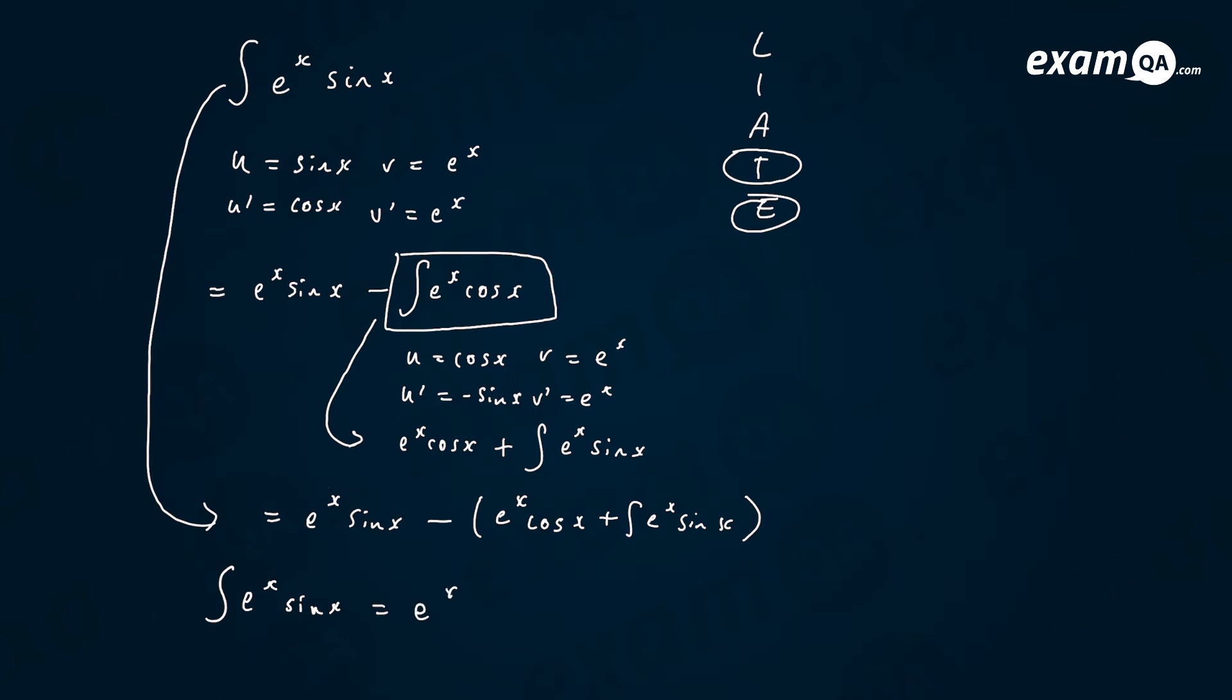E to the x sine x minus bracket. The bracket is very important here. E to the x cos x plus integral of e to the x sine x. Now, if I expand this bracket out.